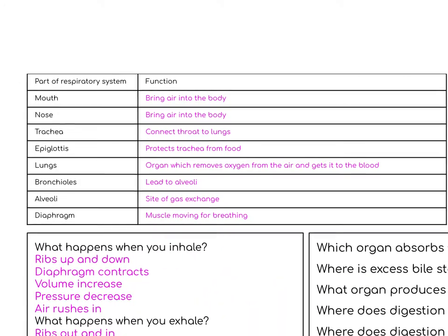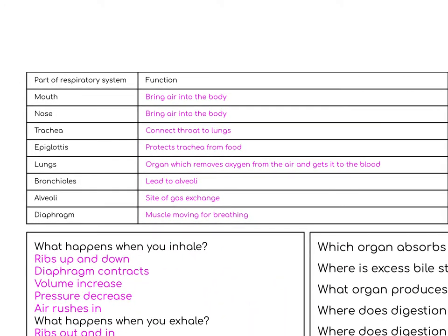The function of the mouth is to bring air into the body. The function of the nose is to bring air into the body. The trachea connects the throat to the lungs. The epiglottis protects the trachea from food, so you don't swallow food and it goes down the wrong pipe. The lungs is the organ which removes oxygen from the air and gets it into the blood.